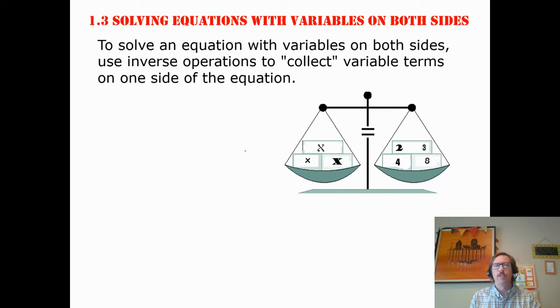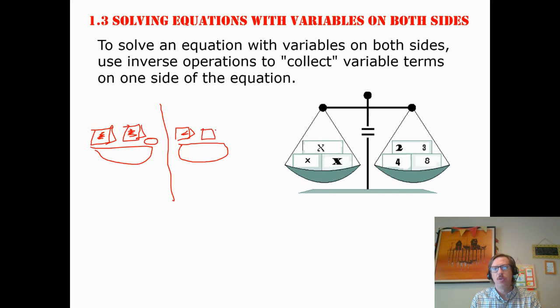All right, so what we covered in class was the idea of collecting variable terms on one side of an equation. What that means is if we have a balance scale and we have x's on both sides, that's like having a paper bag on both sides. So let's say I've got two paper bags on this side. That's my paper bag drawing. And one gold coin. And then I have three paper bags on this side.